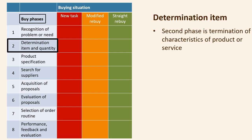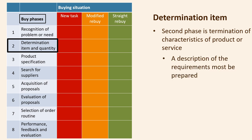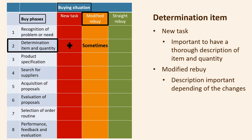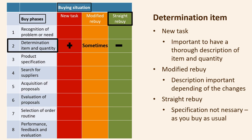Step two in the buying phase is the determination of characteristics and quantity of products or services needed. In this phase, a description of the product or service requirements must be prepared. When making a new purchase, a thorough description of the requirements is essential. In the case of a modified rebuy, this step may be necessary depending on how much circumstances have changed. In the case of a straight rebuy, it is uncomplicated because you buy as usual, so specification of requirements is unnecessary.